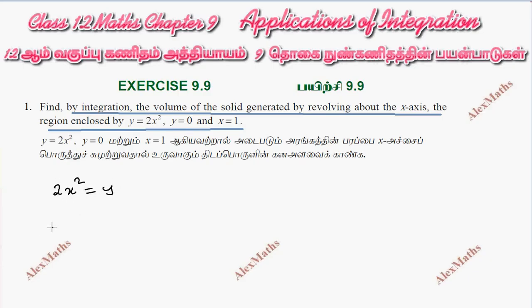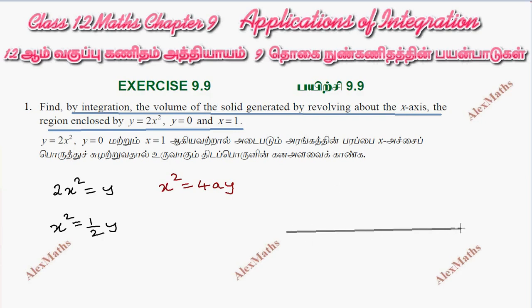So x squared equals one-half y — this is the general form of x squared equals 4ay. This is a parabola opening upward with vertex at the origin, with the x-axis and y-axis shown.